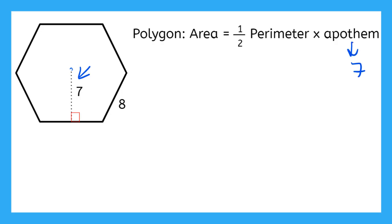And what is my perimeter? I have to count how many sides I have. 1, 2, 3, 4, 5, 6. So the number of sides is 6 times the length of one side is 8. So that's my perimeter, and then 1 half of that.